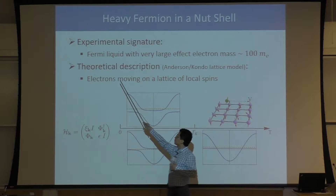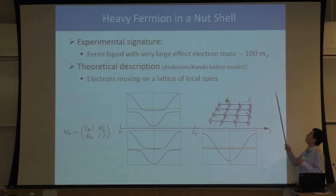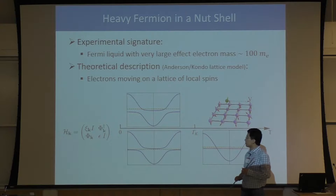Near quantum critical points, things will be different. But if we want to use Fermi-liquid theory to describe this type of compounds, we realize that one needs to assume charged carriers in this compound to have a huge effective mass, typically two or three orders of magnitude larger than free electrons.